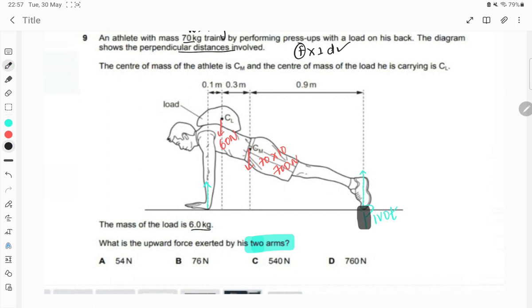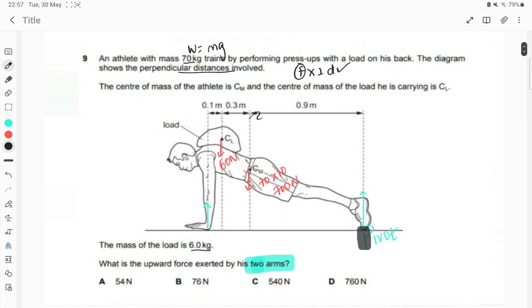Okay, so your feet becomes a pivot. Now keeping the feet as a pivot, let me mark perpendicular distance number 1: 0.9 m. Number 2: 0.9 plus 0.3. And number 3 is from the arm to the feet, which is 0.9 plus 0.3 plus 0.1, making 1.3 m total.